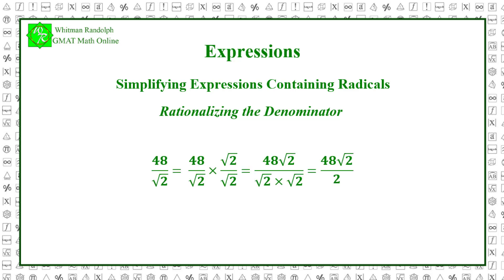48 over the square root of 2 equals 48 over the square root of 2, times the square root of 2 over the square root of 2, which equals 48 times the square root of 2 over 2. Notice how the original fraction, 48 over the square root of 2, was multiplied by 1 in the form of the square root of 2 over the square root of 2. Then when we multiply the square root of 2 by itself in the denominator, the result was 2, which is now a rational number.